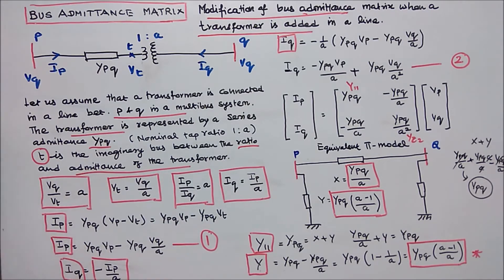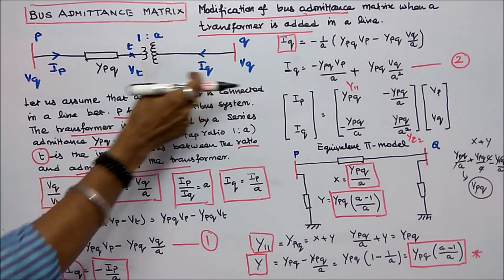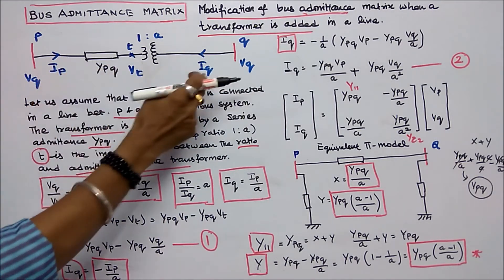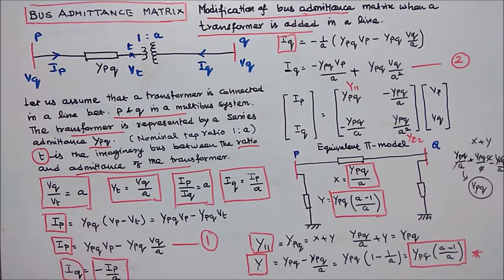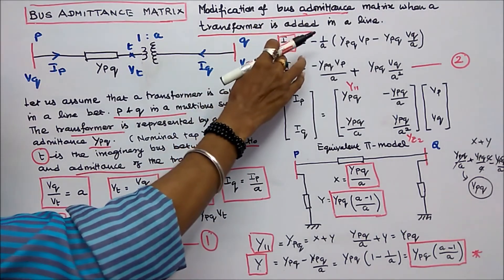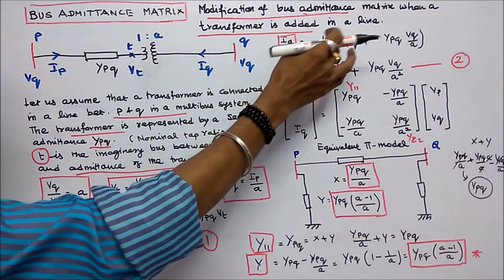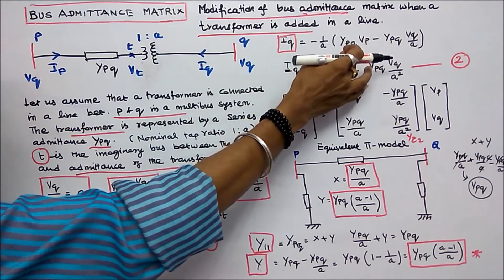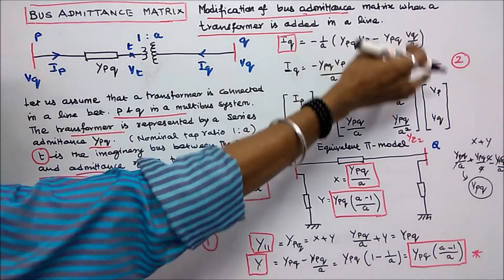The next step: IQ is equal to minus IP divided by A, noting the direction is opposite to IQ. Therefore IQ is equal to minus 1 divided by A, multiplied by YPQ into VP minus YPQ into VQ divided by A.